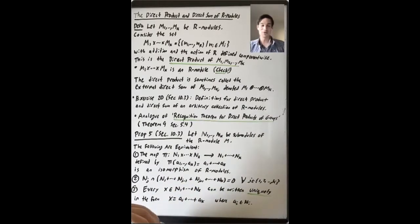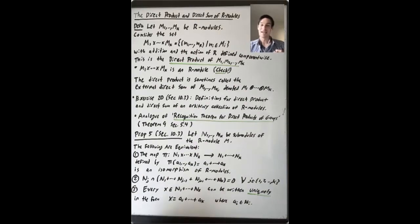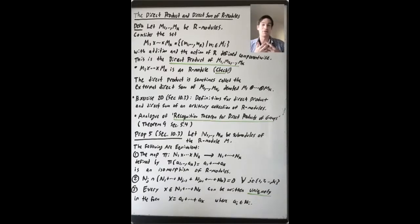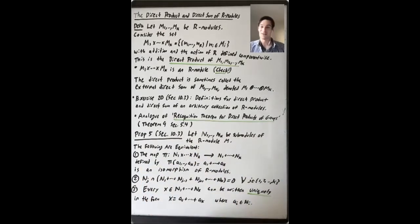The next thing we're going to prove is the analog of the recognition theorem for direct products of groups. The recognition theorem says: given a group G and two subgroups inside, when is G isomorphic to a direct product of two of its subgroups? When can you find an H and a K inside G with some special property that tells you G is isomorphic to H cross K? That's Proposition 5 in section 10.3.